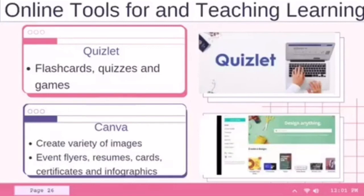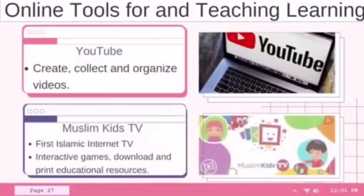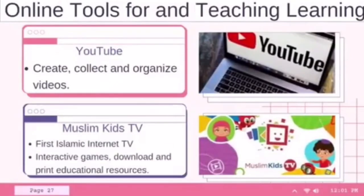Canva can be used to create a variety of images, including event flyers, resumes, cards, certificates, and infographics. YouTube is a free tool that allows you to create, collect, and organize videos around specific topics or interests. And lastly, Muslim Kids TV is the first Islamic internet activity for children to spend time learning about Islam — they enjoy interactive games, downloads, and print educational resources.